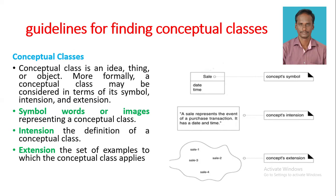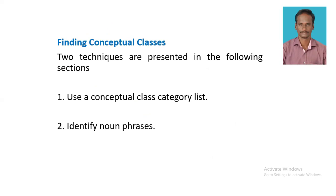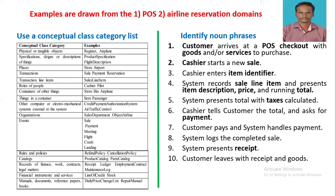Next, how to find the conceptual class. Commonly, we have two techniques to find the conceptual class. The first one is to use a conceptual class category list. The second one is identifying the noun phrase. Let us see them one by one. Initially, we will discuss using a conceptual class category list.